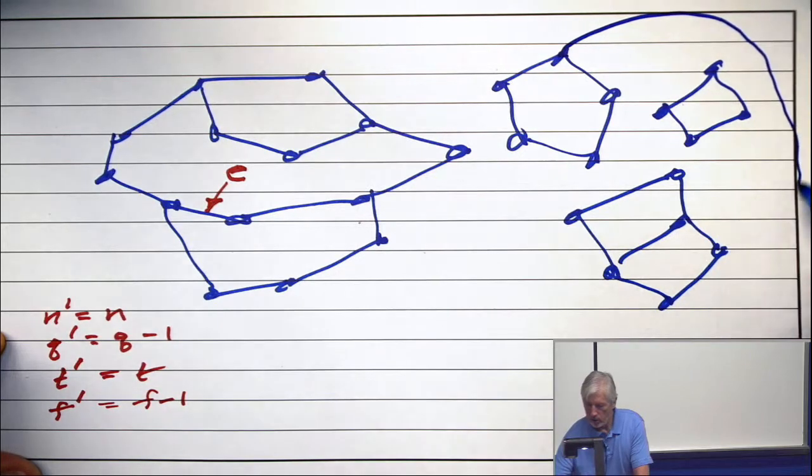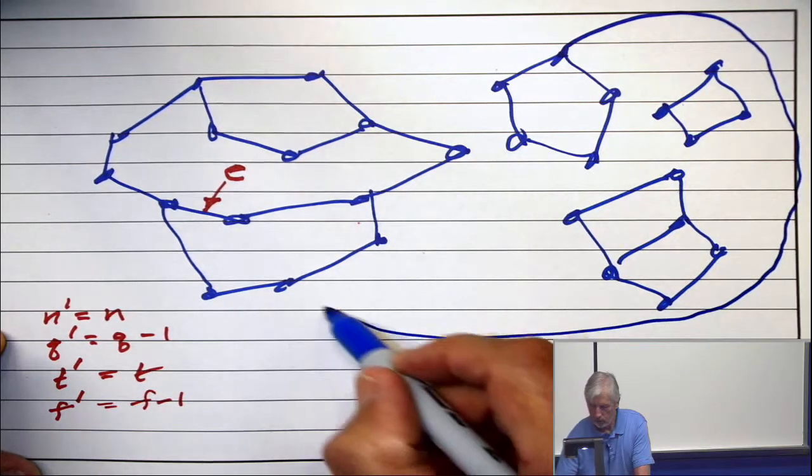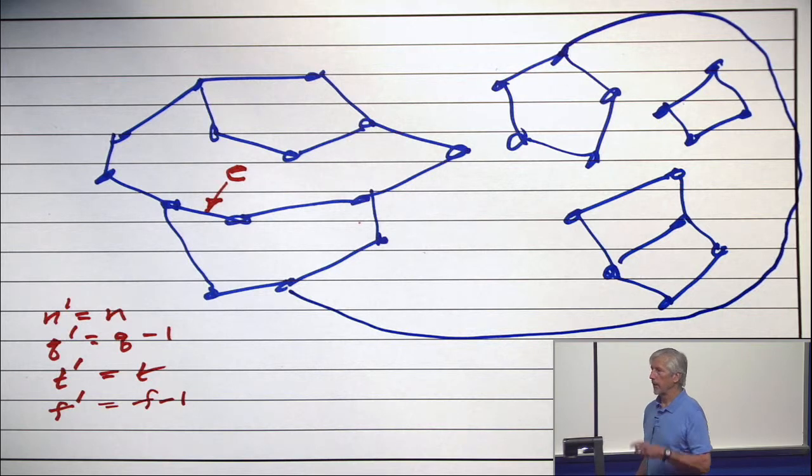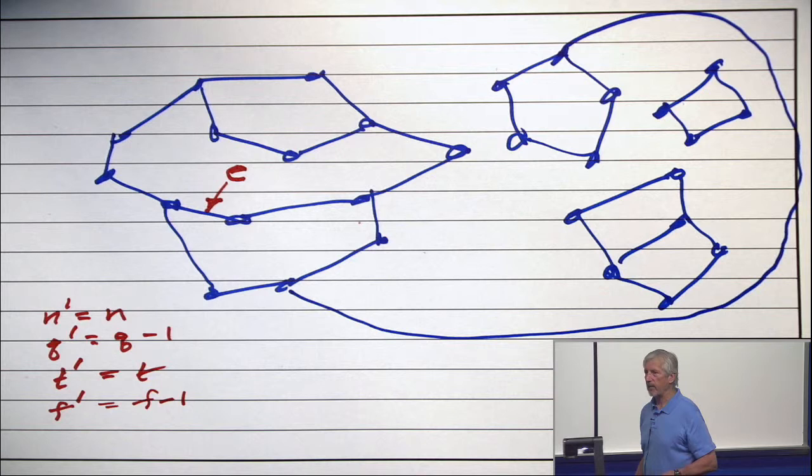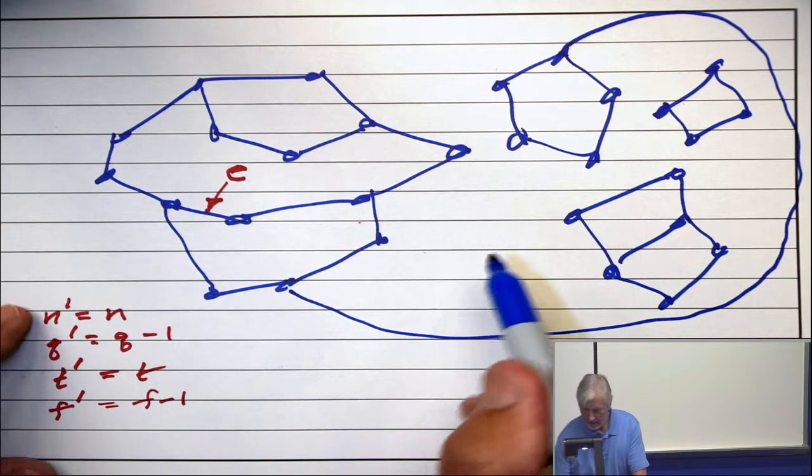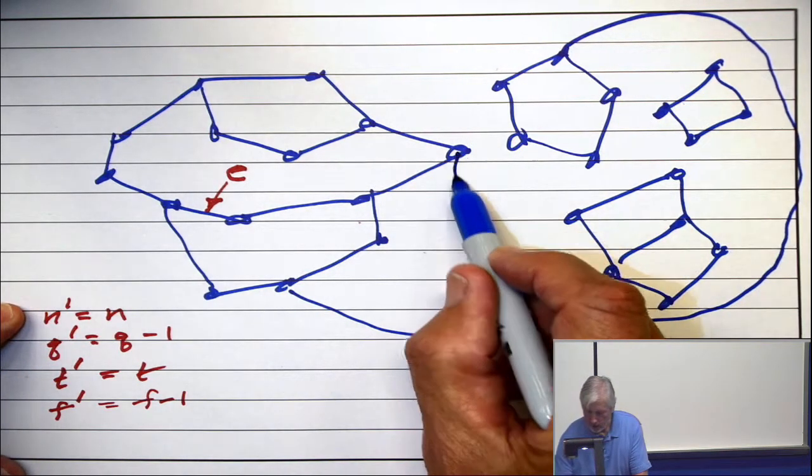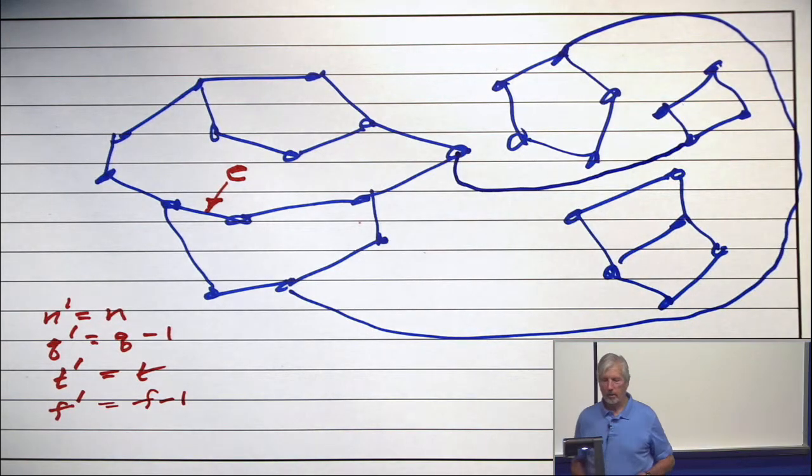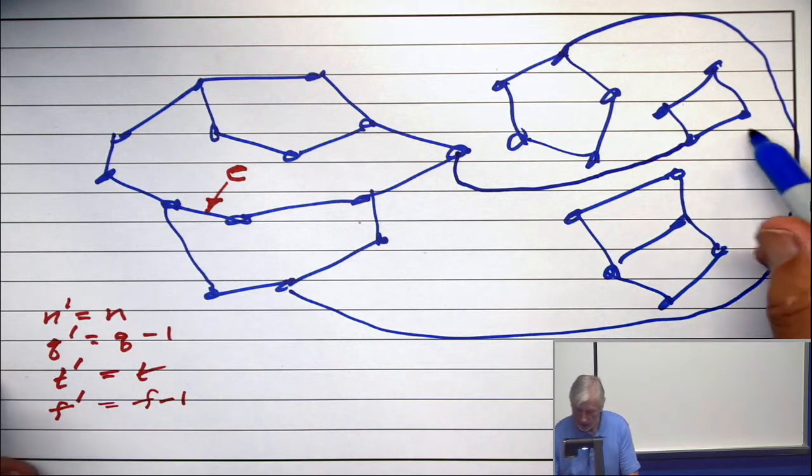So obviously I could join two components that are not connected now and put in an edge like that. Does that have the maximum number of edges? Well, obviously not, because I could join this one, for example, to that one. Does this have the maximum number of edges? Well, obviously not. I could join this one to this one.